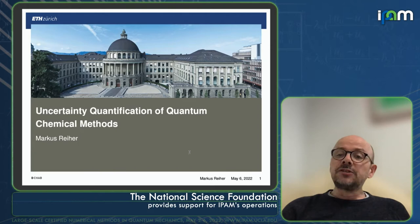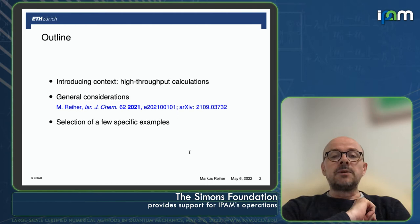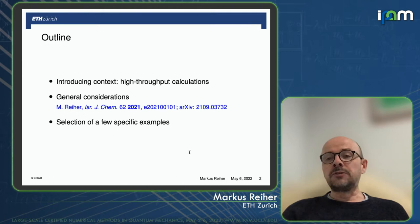I'll give you a brief outline grouped into three categories. The first is introducing the context, mostly in high-throughput calculations, because there the problem is most evident as you generate huge amounts of data and you need to know how good the data is. Of course, if you do calculations manually, you face the same problems.